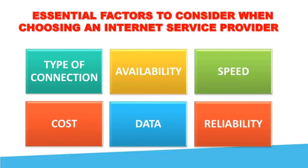Data is an important factor because data essentially determines how much information and content you can send and receive. When it comes to data usage, many of the same things should be considered as when determining speed. Maximum ISPs offer limited data options. If you exceed the limit, you will pay extra. Compared to some ISPs, others provide unlimited data options. It depends on your needs — whether you are searching, downloading, or browsing — how much data and speed you need, and at what cost.